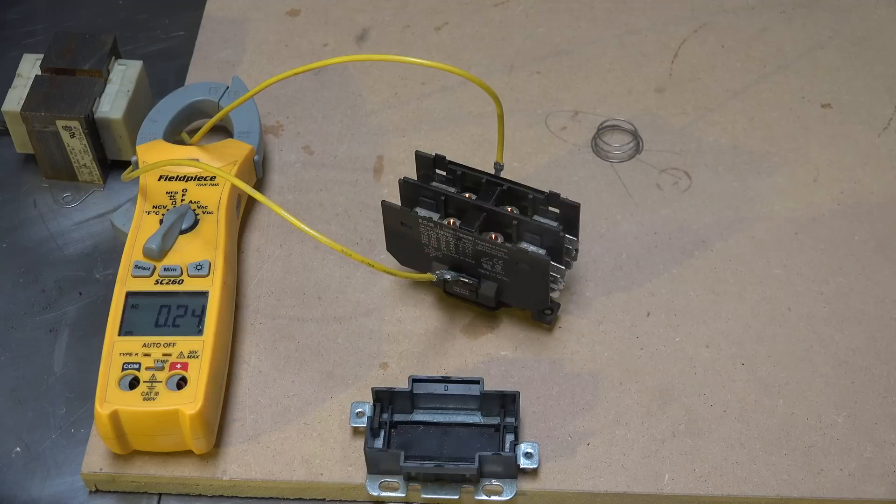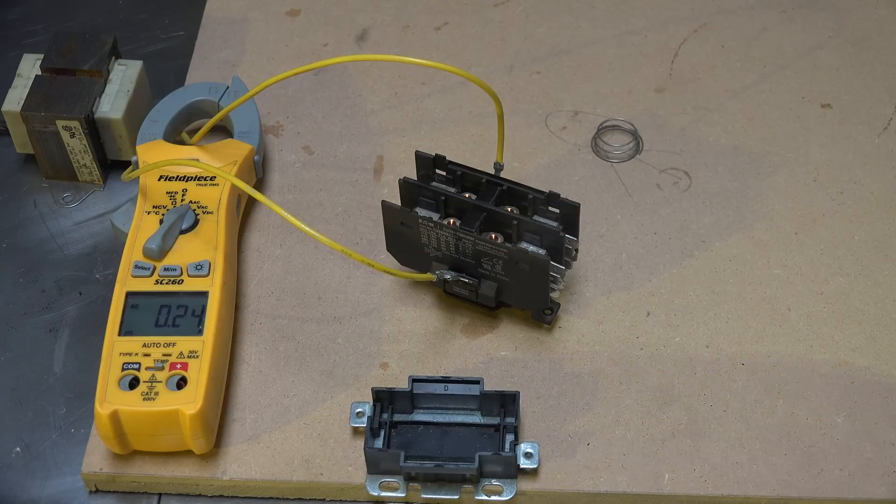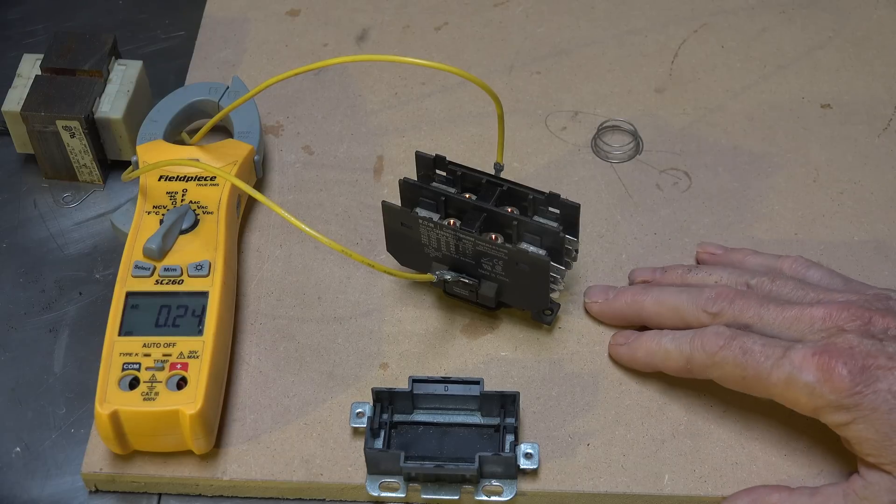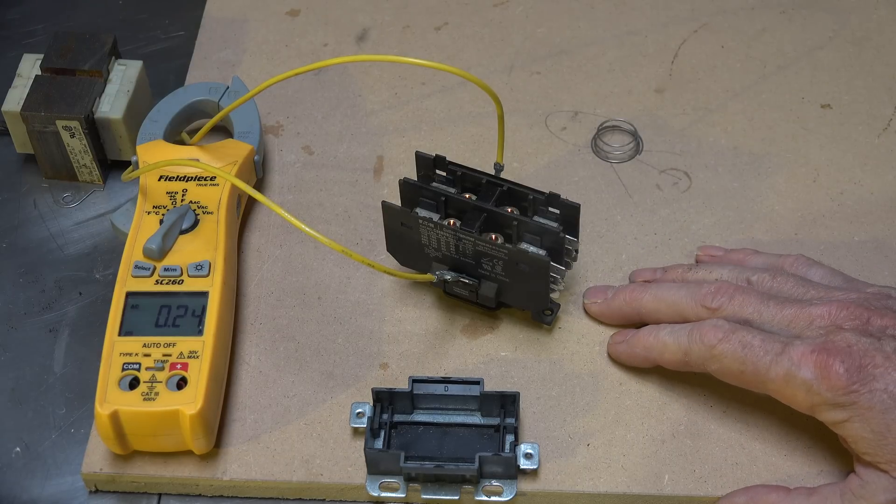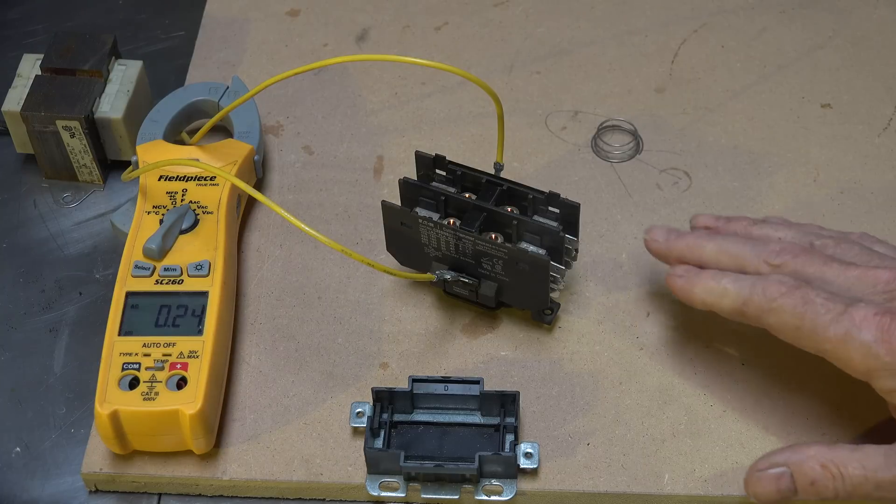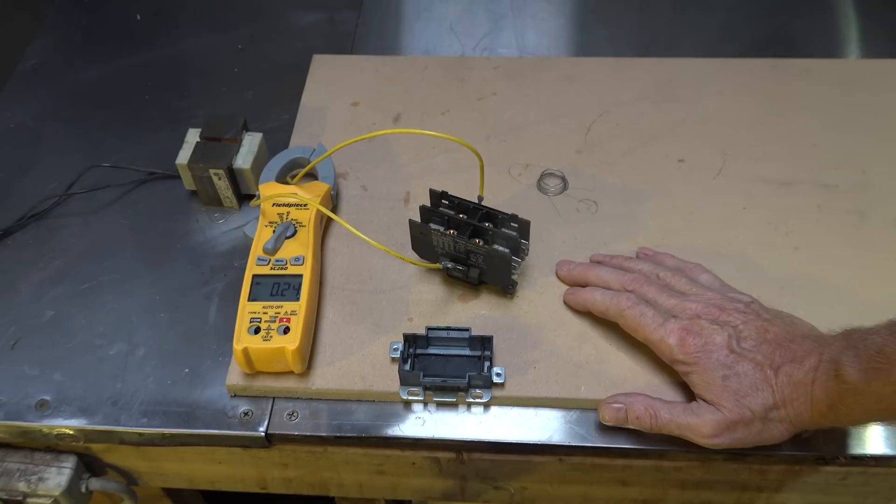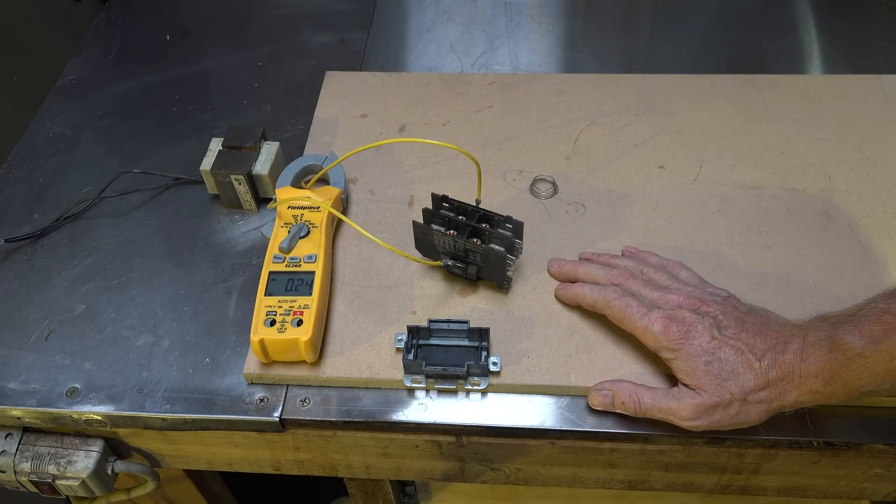Now it goes down to normal draw. That iron core, when it covers completely around it, concentrates that field. And when it concentrates that field it builds up back EMF. That's where this is coming from. It's all back EMF.